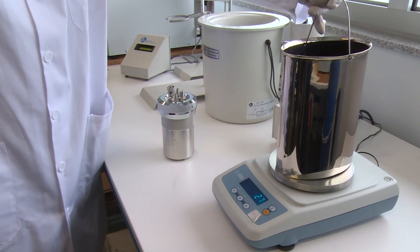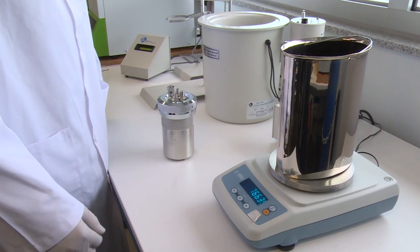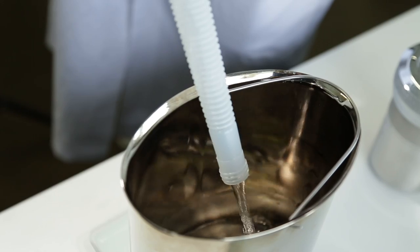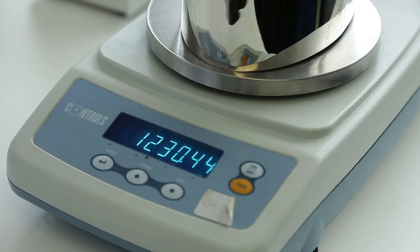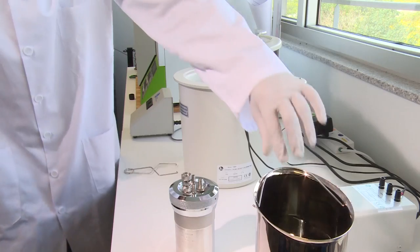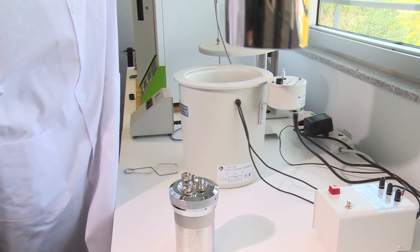Fill the calorimeter bucket by first taring the dry bucket on a solution or trip balance. Add 2,000 grams of water. Set the bucket in the calorimeter.